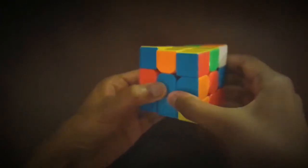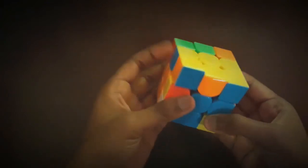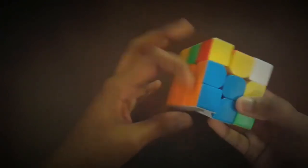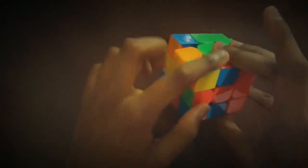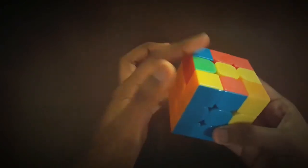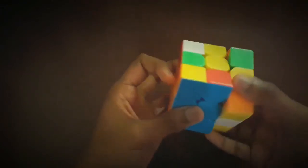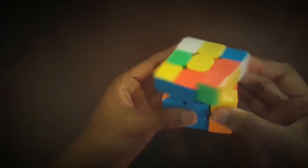Then the next pair will be the blue and orange one and I do this in a regular solve and it was pretty straightforward. The next one would be the blue and red and I'd set them up like so and do F prime U prime F to solve it.